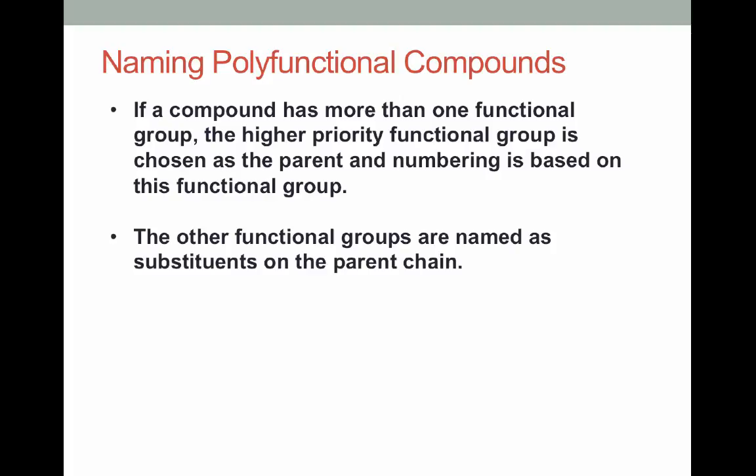In this final section, we're going to look at naming some polyfunctional compounds. When we have multiple functional groups in a compound, how do we know what the parent is and what to base our numbering off of? We're going to look at a series of the most common functional groups in order of priority. Based on that priority, we'll pick our parent functional group, and then treat our other functional groups as substituents on that parent chain.